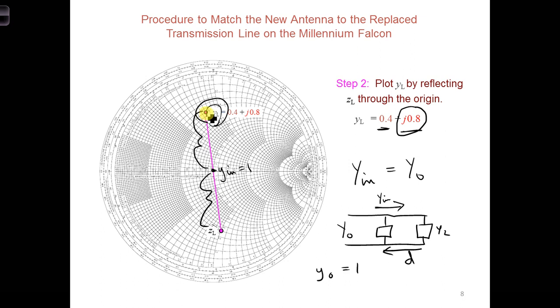So for example, here's Y_L. If we cancel the imaginary part, that means we would basically be moving this down to here, to where we have just a real value.